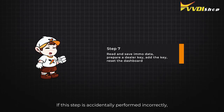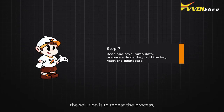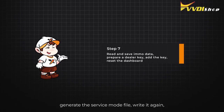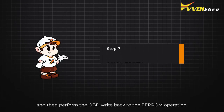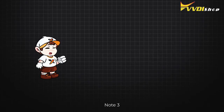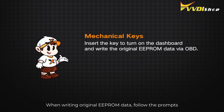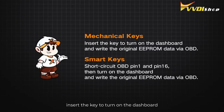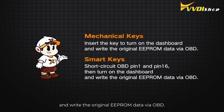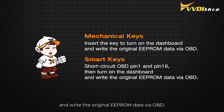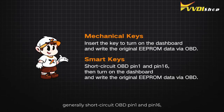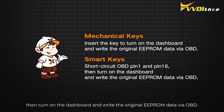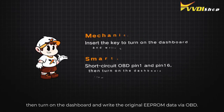If this step is accidentally performed incorrectly, the solution is to repeat the process: generate the service mode file, write it again, and then perform the OBD write-back to the EPROM operation. Note 3: When writing original EPROM data, follow the prompts for mechanical keys — insert the key to turn on the dashboard and write the original EPROM data via OBD. For smart keys, generally short circuit OBD pin 1 and pin 16, then turn on the dashboard and write the original EPROM data via OBD.